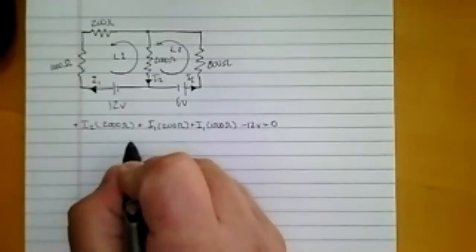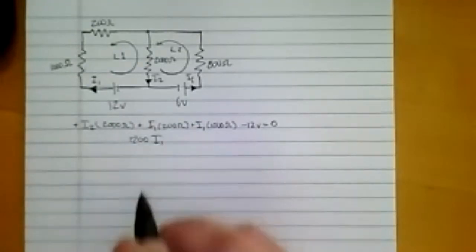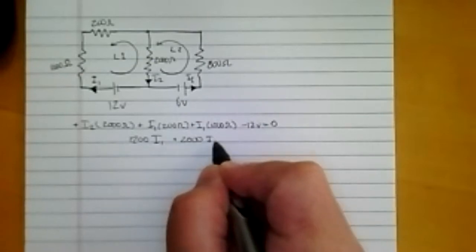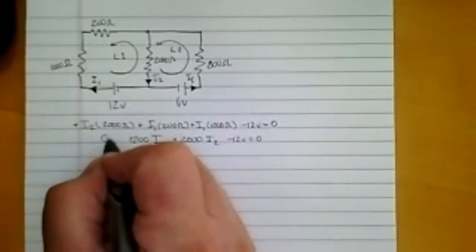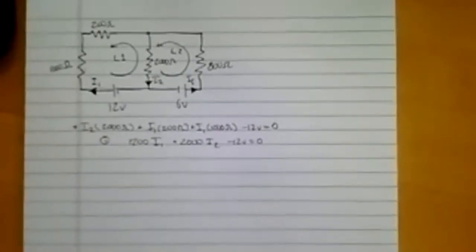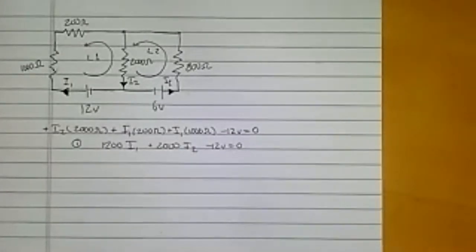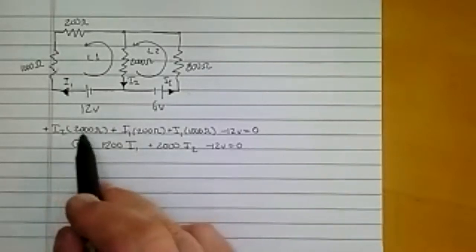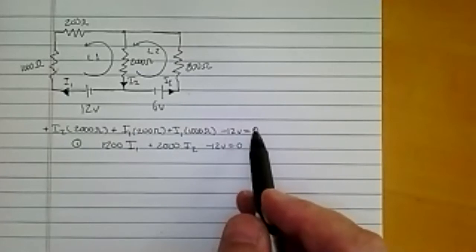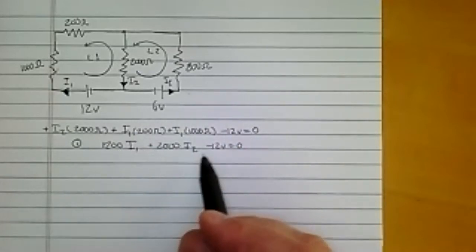I could simplify this a little bit and say it's 1200 I1, notice I'm dropping off the ohms right now, 1200 I1 plus 2000 I2 minus 12 volts is equal to zero. I'm going to call that equation one. When you're dealing with systems of equations it's always good to number the original equations because you always need to take an accounting of how many equations you have and how many unknowns you have.